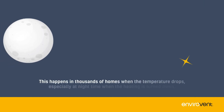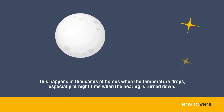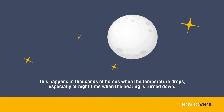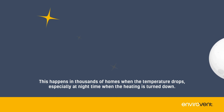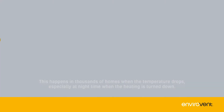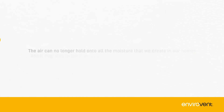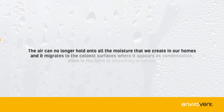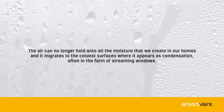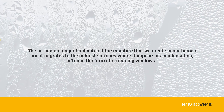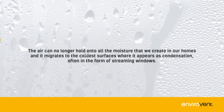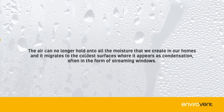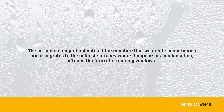This happens in thousands of homes when the temperature drops, especially at night time when the heating is turned down. The air can no longer hold on to the warm moisture that we create in our homes, and it migrates to the coldest surfaces where it appears as condensation, often in the form of streaming windows.